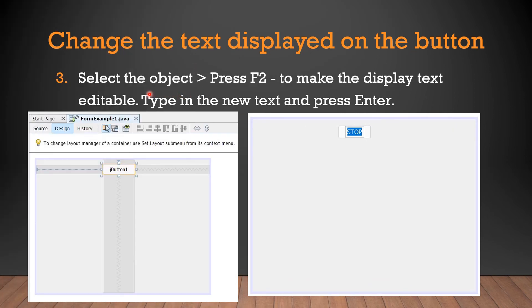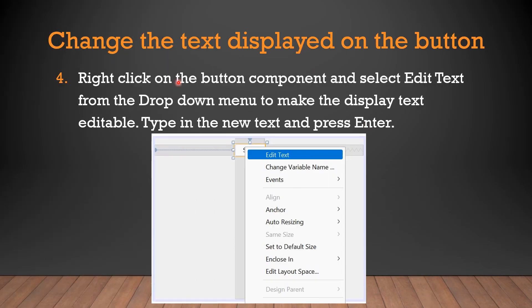Third method: select the object and press the F2 key. The text will be highlighted and you can simply edit it, then press Enter. Fourth method: right-click on the button component and select 'Edit Text' from the drop-down menu. After this, you can type the new text and press Enter.